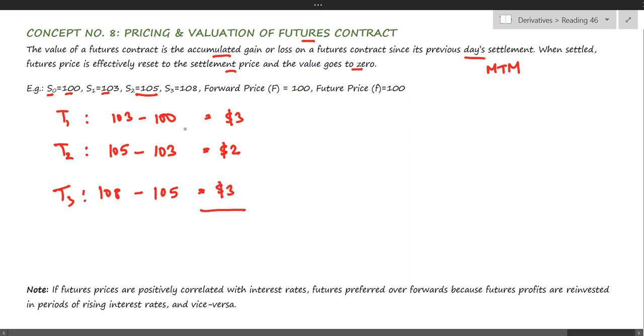If you add the profit of all three days, you get a profit of $8 on this contract. This is the futures payoff. Daily MTM settlement means that every day these profits are credited to the gainer's account and debited to the margin balance of the loser's account on a daily basis.